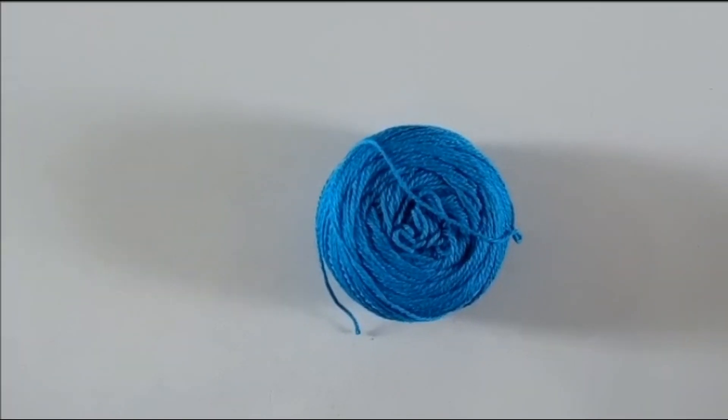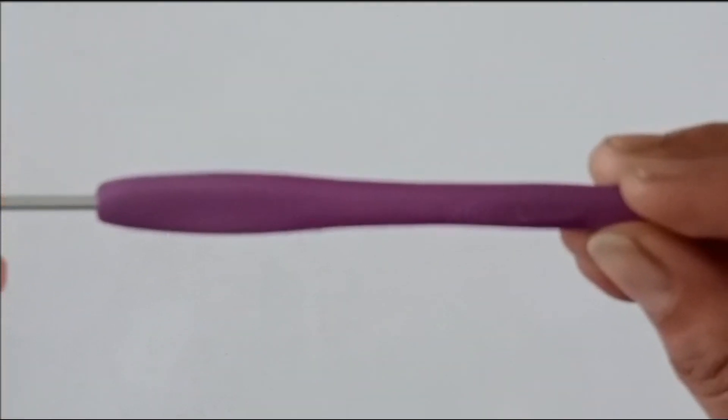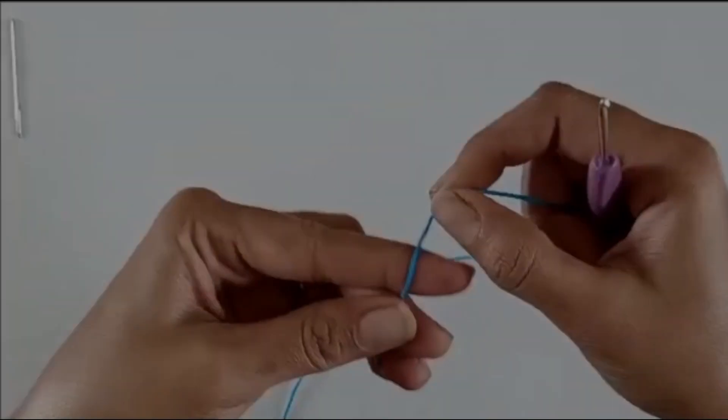are any color three-ply cotton yarn as per your choice, a 2.5 mm crochet hook, scissors, and tapestry needle. So let's begin. Let's make a slip knot.